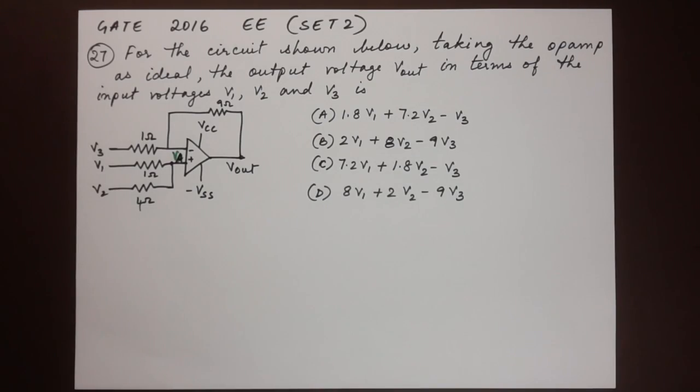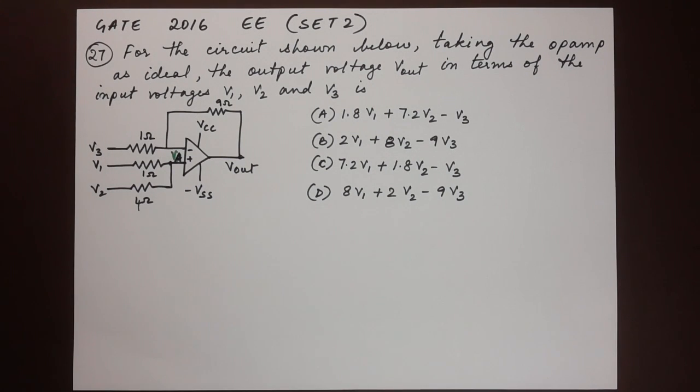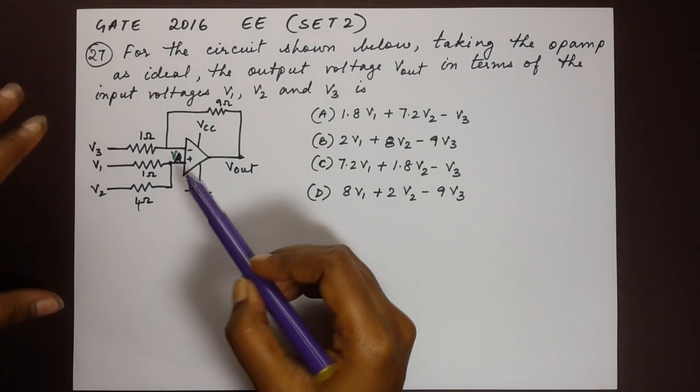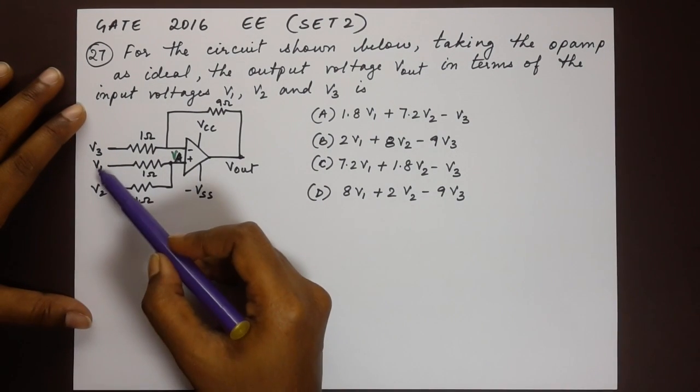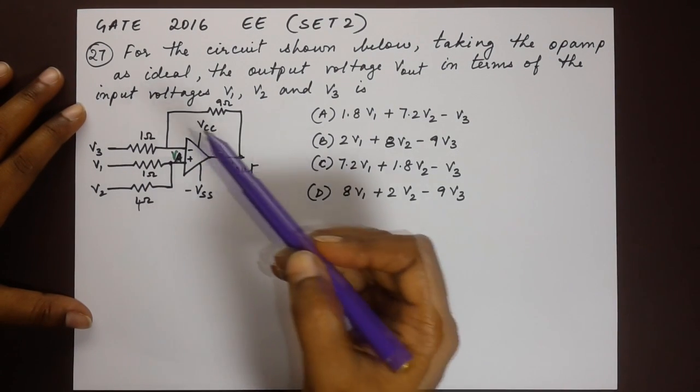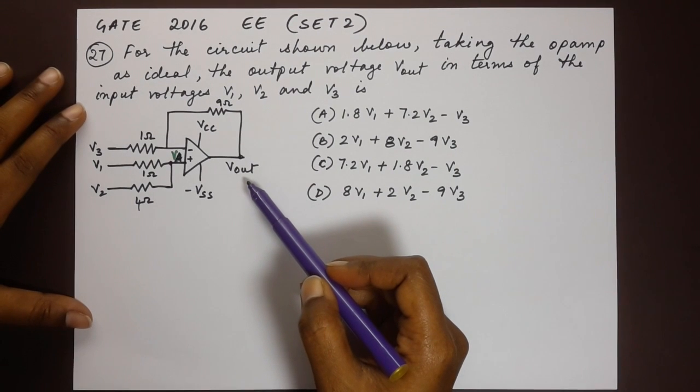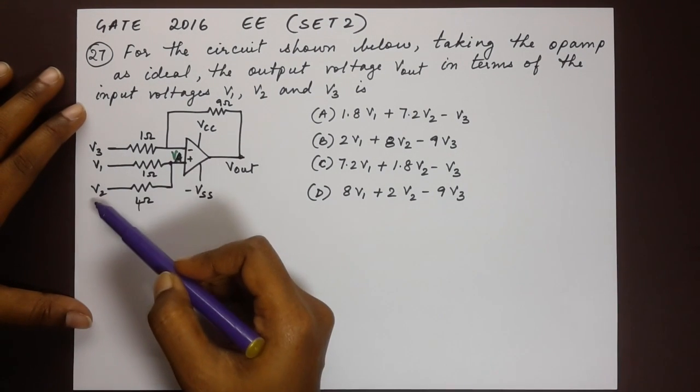Here's the next question, number 27. For the circuit shown below taking the op-amp as ideal, the output voltage Vout in terms of the input voltages V1, V2 and V3 is. We have been given the circuit, the operational amplifier circuit here with three inputs V1, V2, V3 and we are supposed to find out the output voltage in terms of these three.